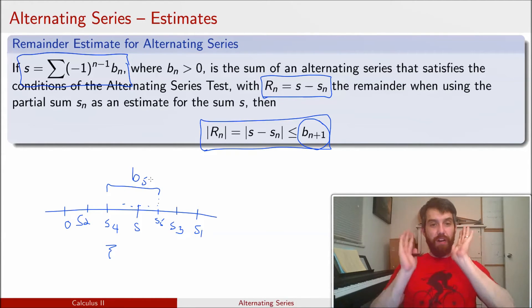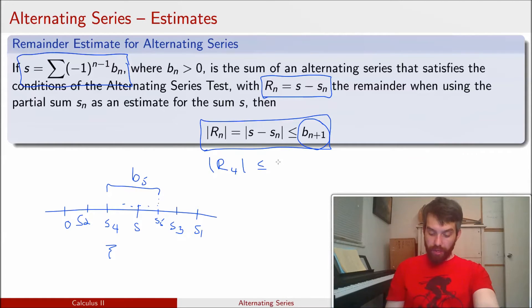So what we get is that if I'm going to use s4 as my approximation, that's the value I'm going to use, then the difference between s and s4 is some number less than the b5. Or in other words, in this case, my r4, the size of that, is going to be less than or equal to the value of b5. I always have to add 1.